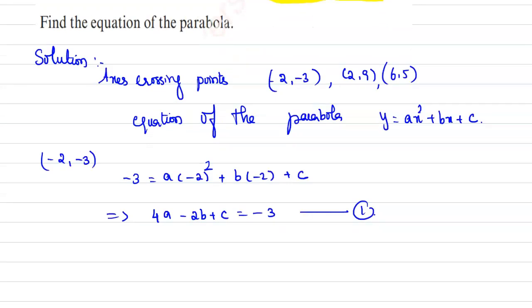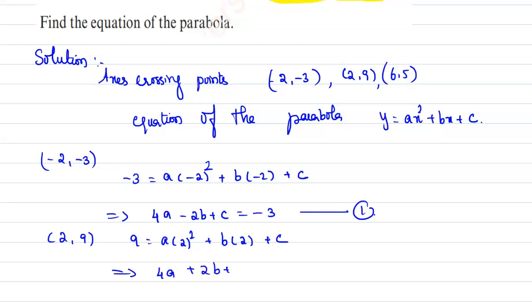Similarly, consider the point (2, 9). Substituting gives: 9 = a(2²) + b(2) + c, which implies 4a + 2b + c = 9. This is equation 2.